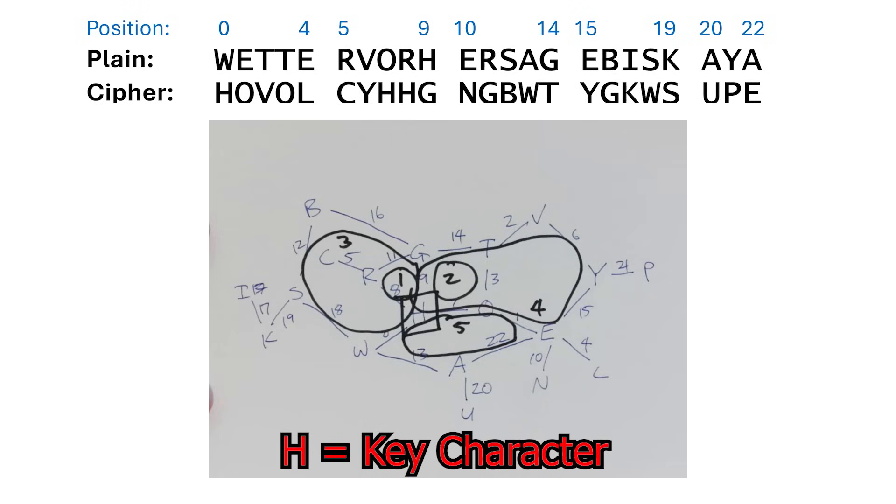The problem is, this happens to be a particularly good crib and rotor setting combination. It yields multiple loops or closures, so we have plenty to work with, but that's not always the case.